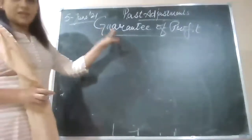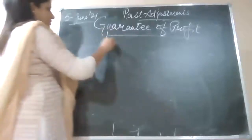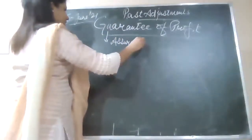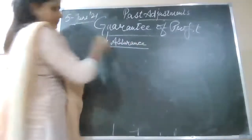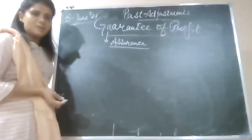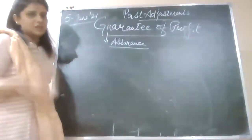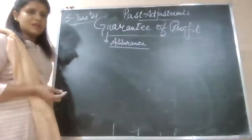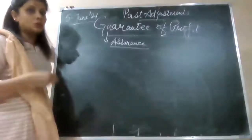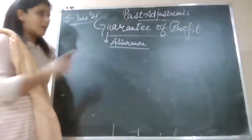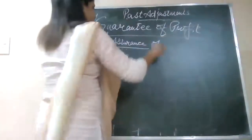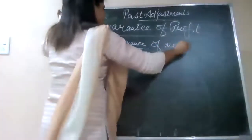Now, guarantee means assurance. You will hear that a borrower has taken a loan from the bank and the bank asked the guarantor — meaning if the main borrower does not repay, the guarantor's liability becomes the same. Similarly, in our firm, one of the partners may give assurance to any new or existing partner about the minimum amount of profit — assurance of minimum profit to be given.